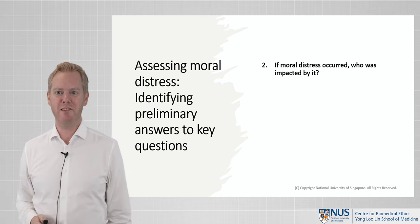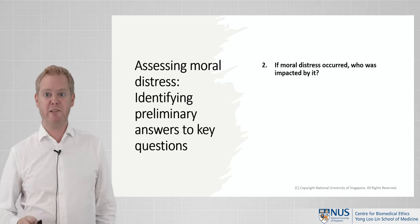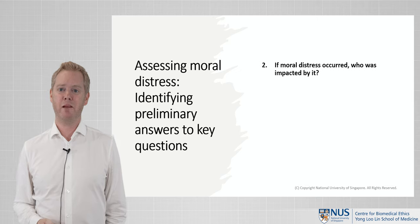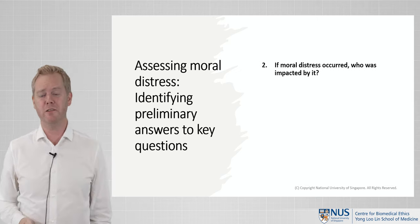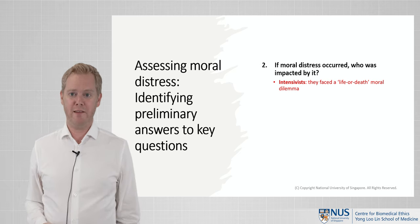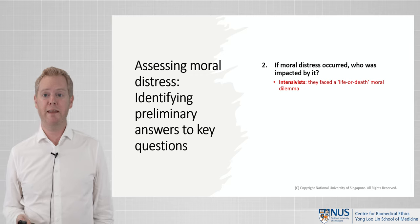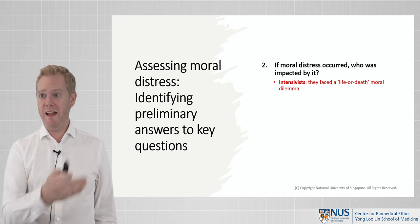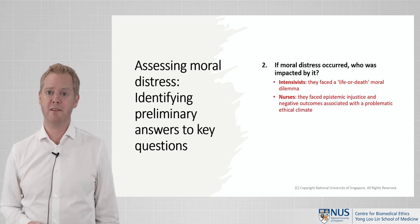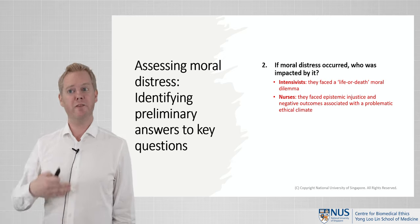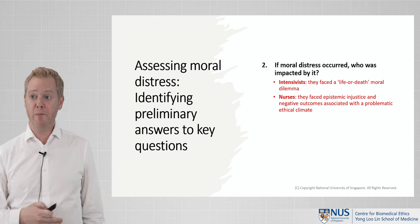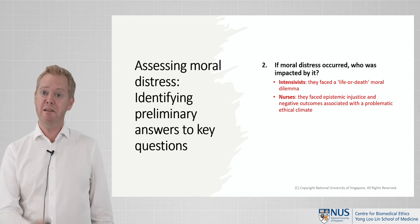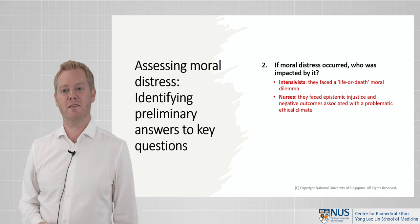The next question we're tasked to answer is: if moral distress occurred — and I think we can now conclude from our answers to the first question that it did — who was impacted by it? Who is essentially the experiencer of the moral distress itself? That seems to me to be quite straightforward, generally. The intensivists faced this moral dilemma. They were the decision makers, it was a life or death decision, and they were distressed by making that decision. Nurses, I think in the scenario described, faced epistemic injustice and negative outcomes associated with the problematic ethical climate. So I think we would also say that they are experiencing a different kind of moral distress than the intensivists in the case.